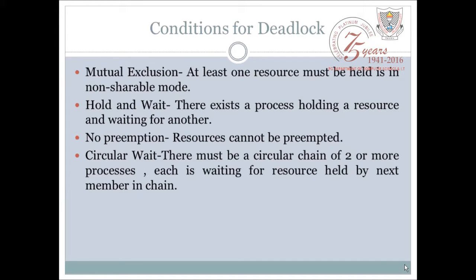The last condition is circular wait. Circular wait का मतलब है एक chain बन जाना processes की, जिसमें हर एक process एक resource को पकड़े हुए है और किसी दूसरे resource के लिए wait कर रही है। तो यह chain जो बन रही है that is resulting in the circular wait. So these were the four conditions for deadlock in operating system.